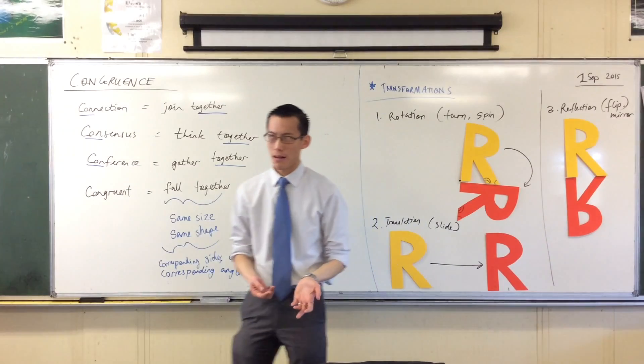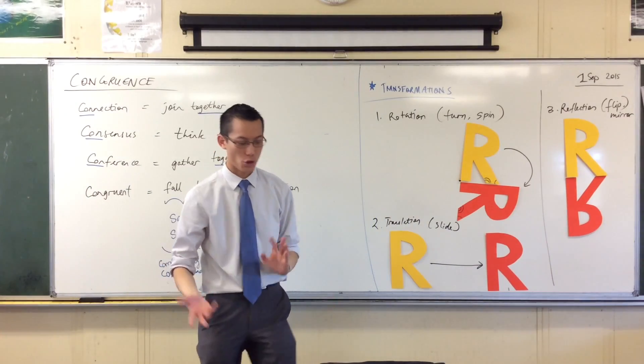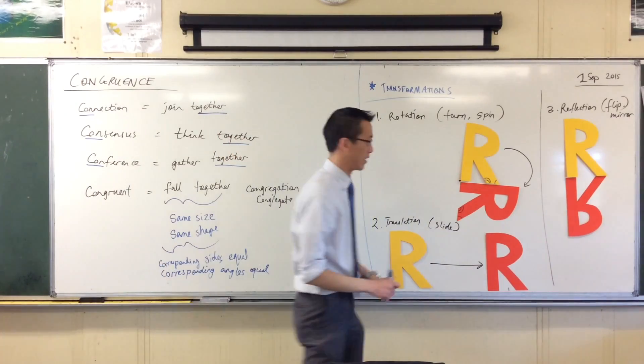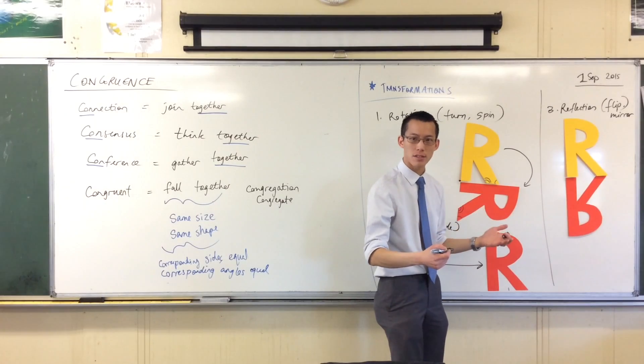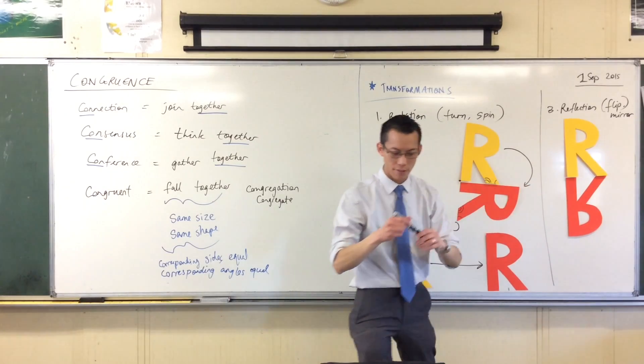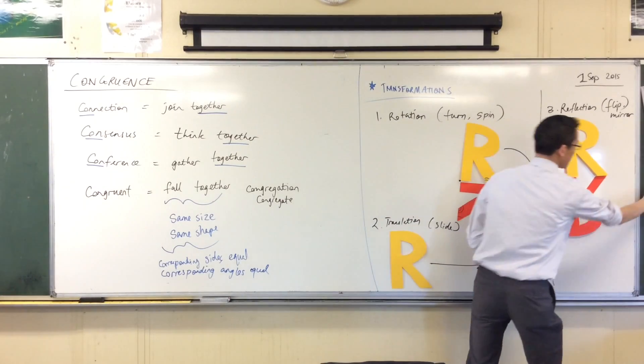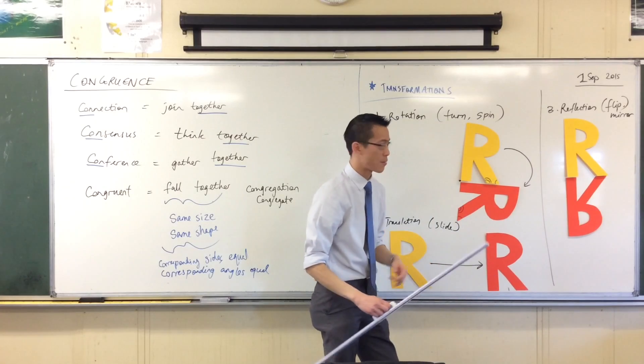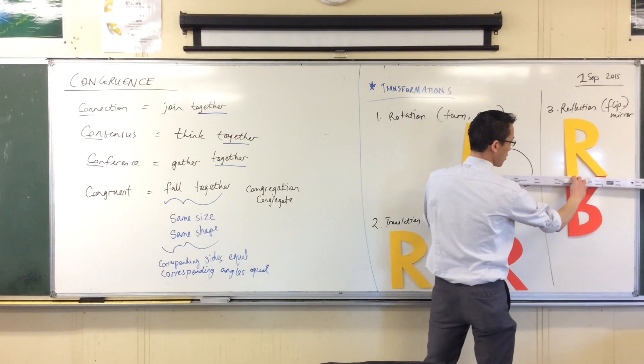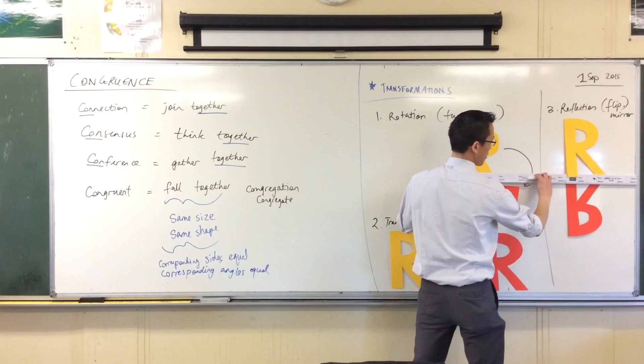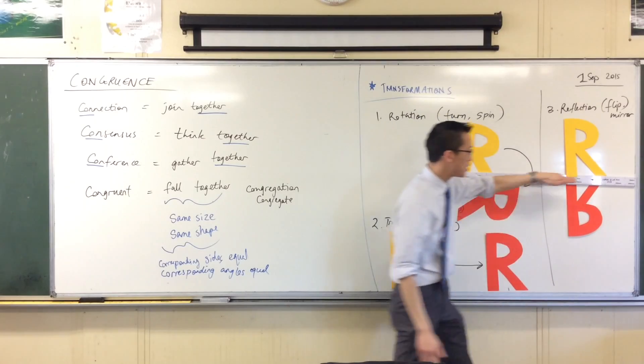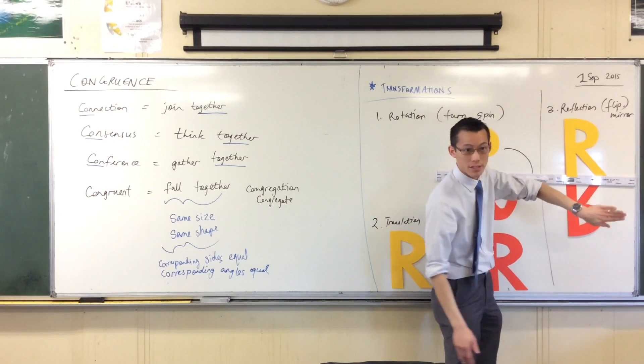See how we rotate around a point. We rotate around a point. But when you reflect, you don't reflect around a point. You don't even reflect across a point. You're reflecting across a line. In fact, I have my ruler here. You can see the line I'm reflecting is right here. Do you see that?